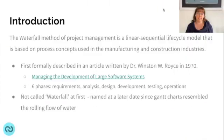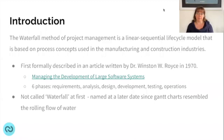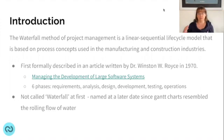The waterfall method of project management is what's called a linear sequential lifecycle model, and it's based on process concepts that were used in manufacturing and construction industries. It was first formally documented in 1970 by Dr. Winston Royce. There are some concepts that go back as far as the 1950s discussing this same linear sequential approach, but 1970 is when most people credit it as first being written down and logically articulated.